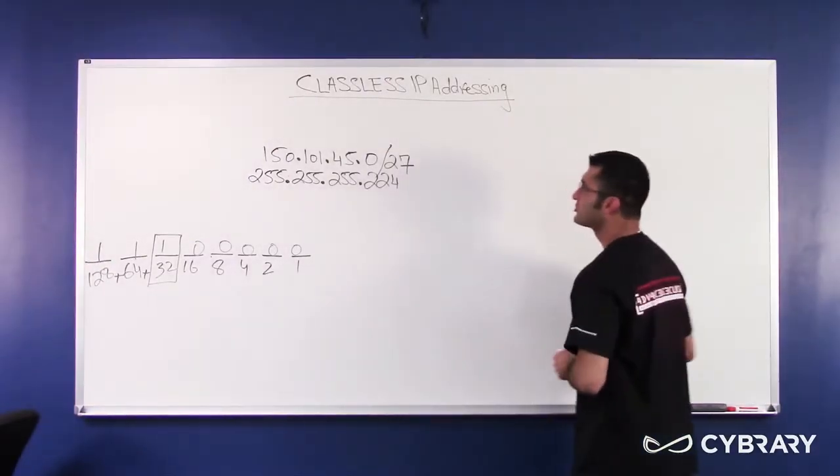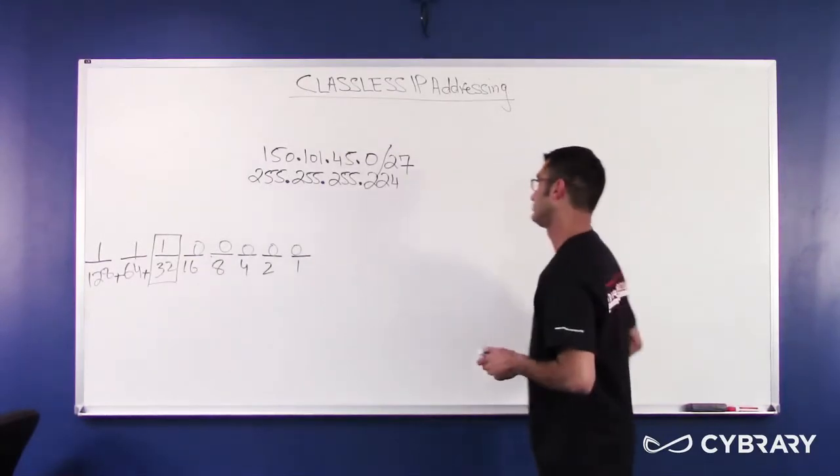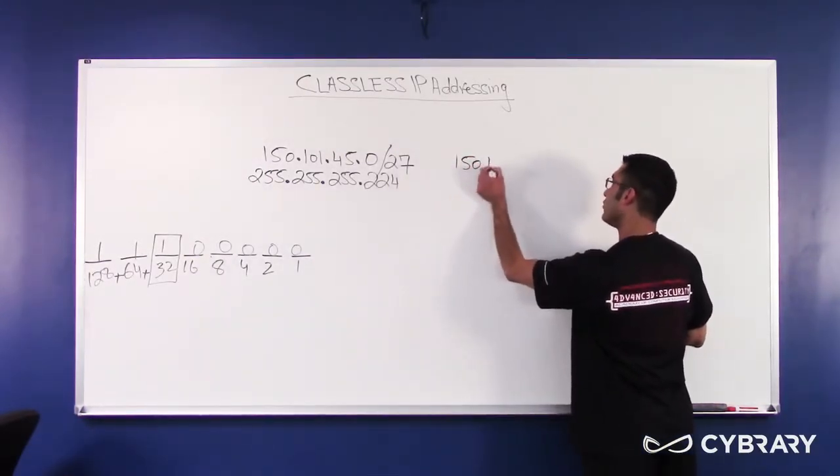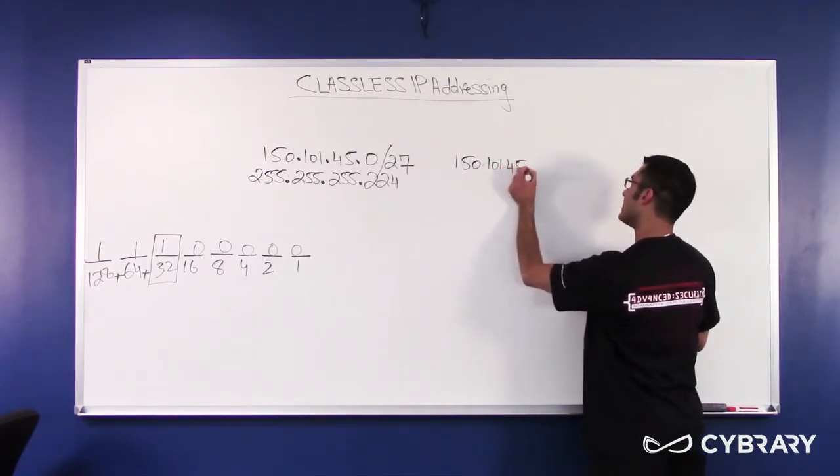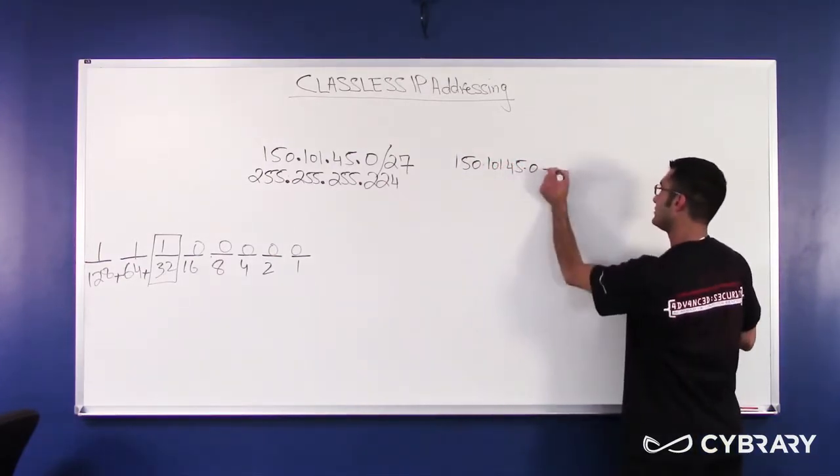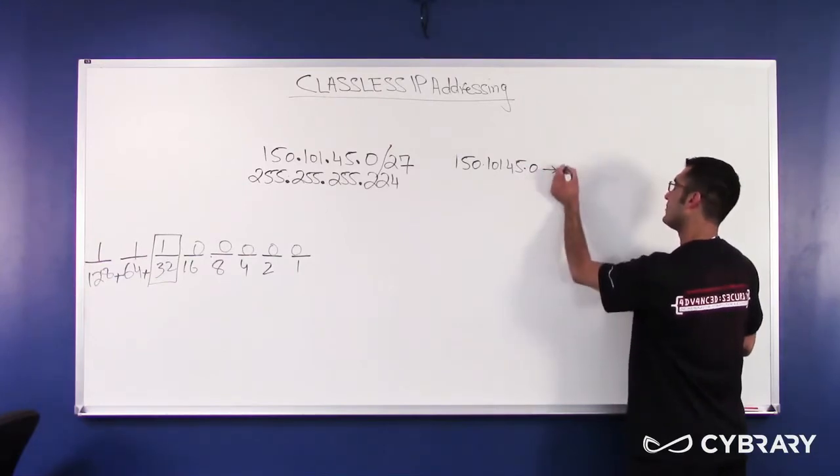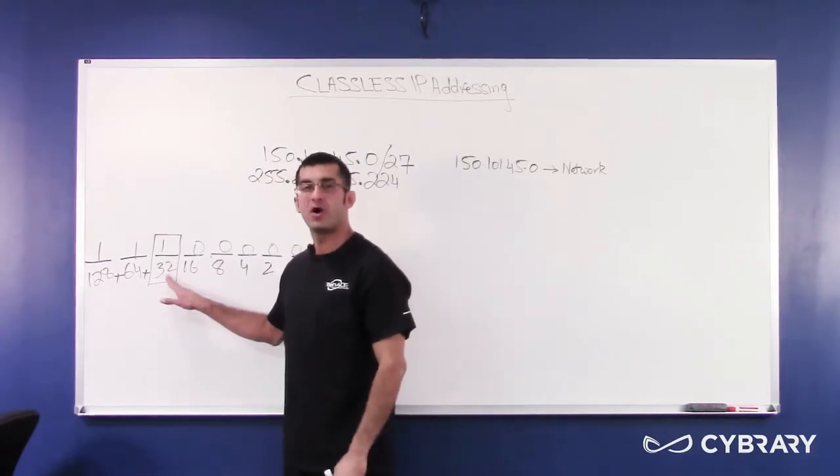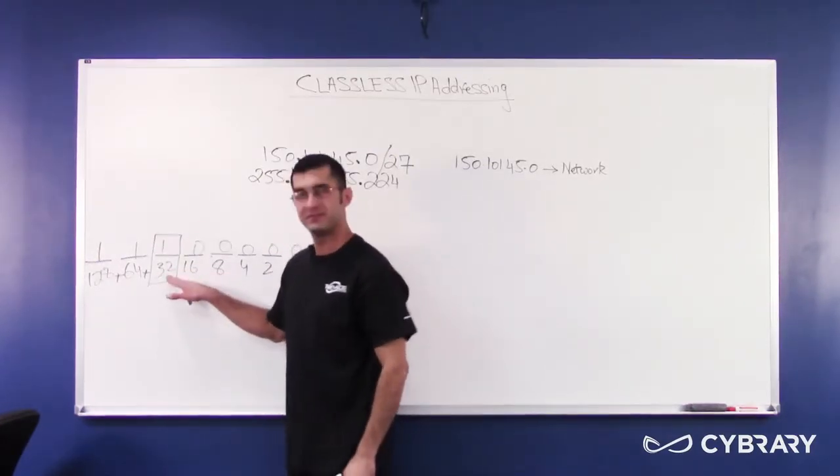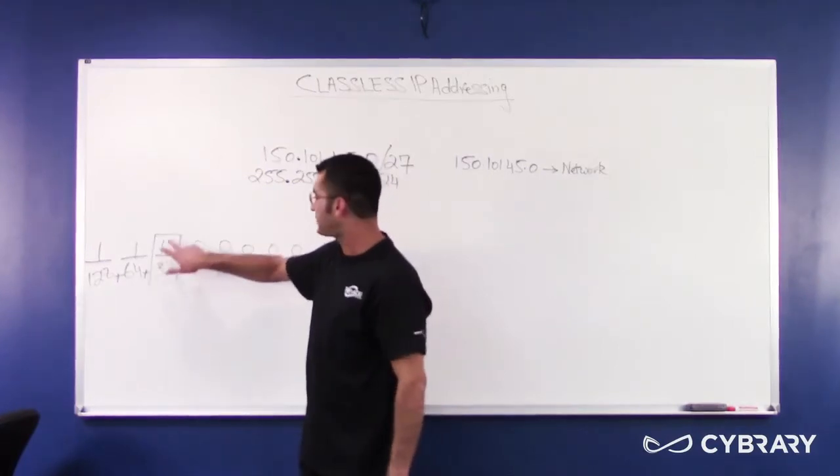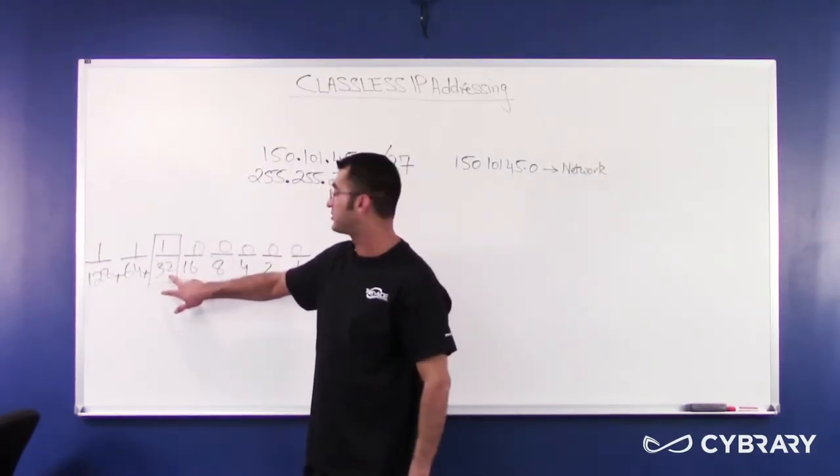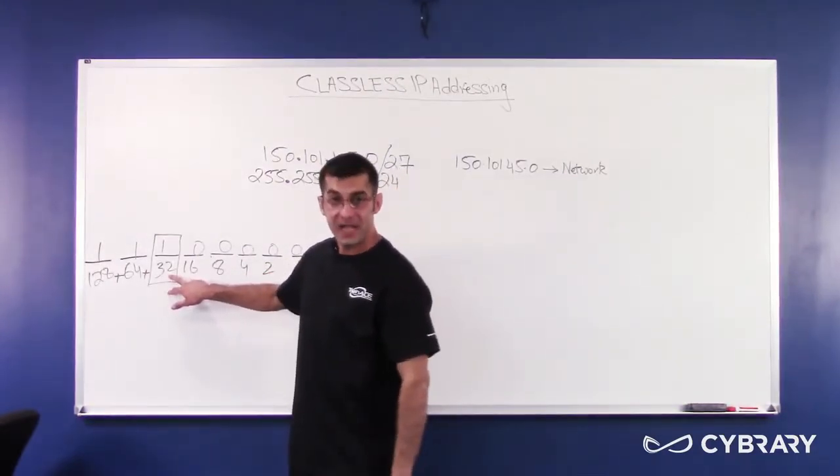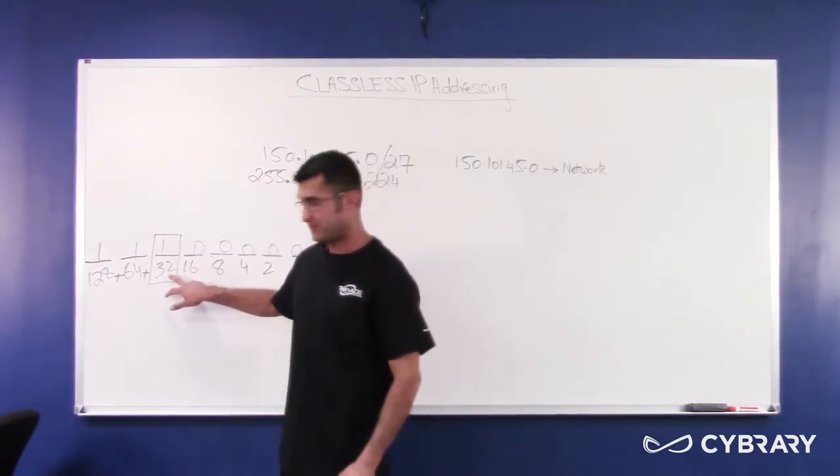How many total hosts can I have in this network? Let's find out. You start at 150, 101, 45, dot 0. This is my network address. I look at the value of the last bit turned on in the subnet mask. Hence, I put a square around it. The value of the last bit turned on in the subnet mask is 32. Remember this rule. This gives me my block size.